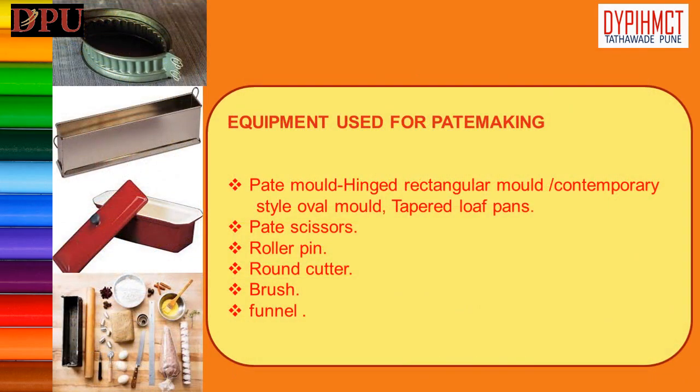Equipment and molds used for pâté: 1. Hinged oval pâté mold (classical style) — a three-quarter piece hinged mold with ornate decoration on the sides. 2. Hinged rectangular mold (contemporary style) — allows higher product yield and easier portioning; generally used for commercial quantity production; normally consists of three pieces of hinged mold made of black steel. 3. Tapered loaf pans — used for home-style pâté; the sides are tapered for easy removal. Additional tools include pâté scissors, a roller for rolling dough, round cutters for chimneys, a brush for egg wash, and a funnel to pour aspic jelly through the chimney.